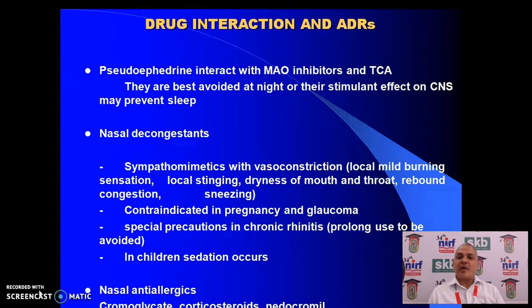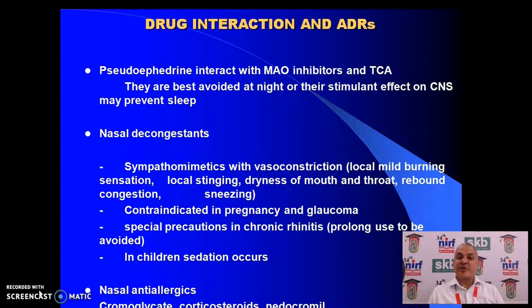We need to look at drug interactions and adverse drug reactions for drugs used in acute coryza. Pseudoephedrine interacts with MAO inhibitors and tricyclic antidepressants, so patients on tricyclic antidepressants should not be given pseudoephedrine. Sympathomimetics generally cause vasoconstriction and are contraindicated in pregnancy and glaucoma. Special precautions should be observed in chronic rhinitis, and in children sedation can occur.